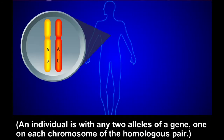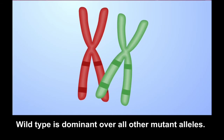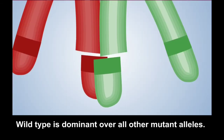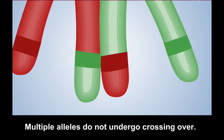An individual has any two alleles of a gene, one on each chromosome of the homologous pair. Wild type is dominant over all other mutant alleles. Multiple alleles do not undergo crossing over.